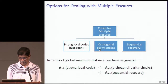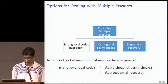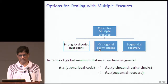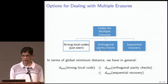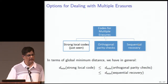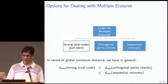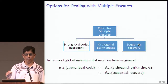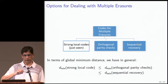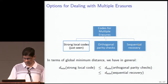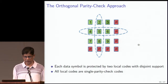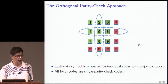We thought about it further and said you can do slightly better using what we call sequential recovery, which interestingly links — however distantly — to LDPC codes and fountain codes, since they also rely on sequential recovery for erasure correction. Here's an example of a code that recovers from multiple erasures using the orthogonal parity check approach — a simple product code where message symbols are each protected by two parity checks, one row parity and one column parity.